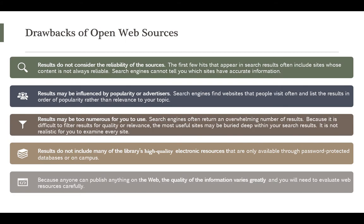Drawbacks of open web sources: the results don't consider reliability. The hits at the top sometimes paid for their placement — some places use search engine optimization to make sure they appear first, which doesn't mean they're the most reliable. Usually your Wikipedia source is the first thing that pops up because more people click on it, and the more clicks, the higher it ranks in search results. Popularity does not mean correct. The most popular thing is not always the right thing.